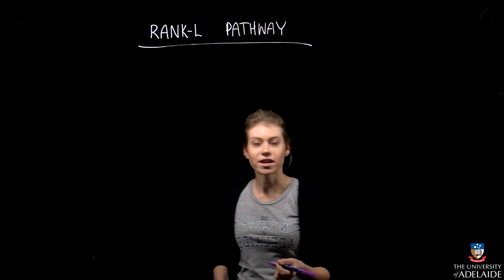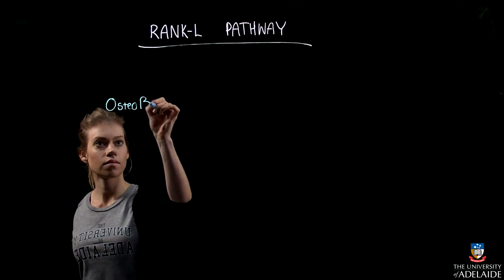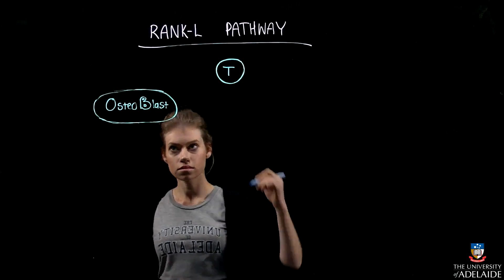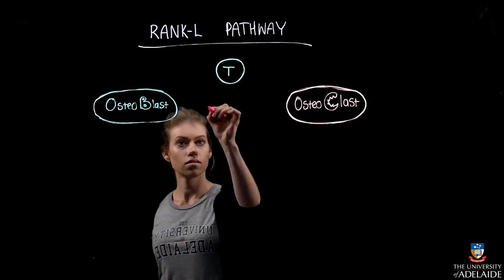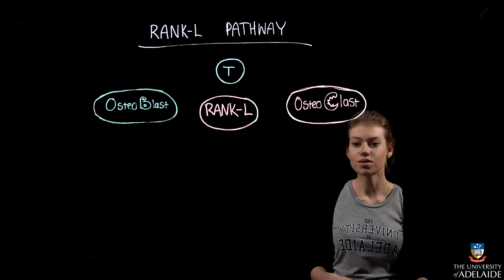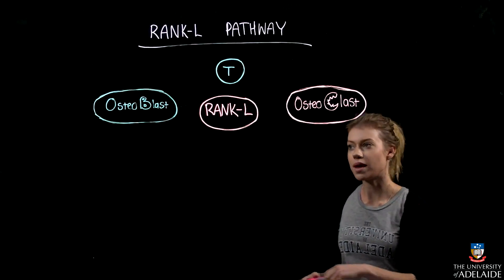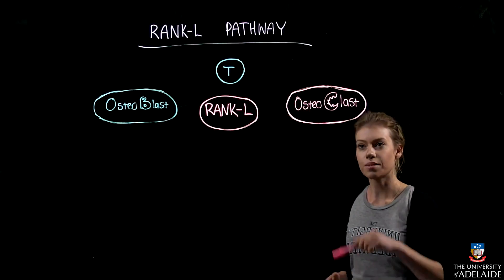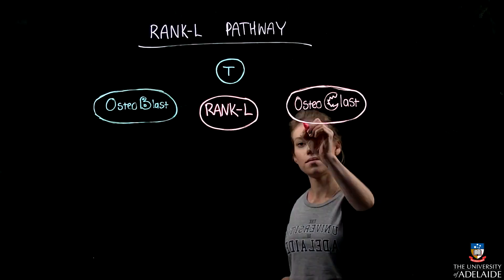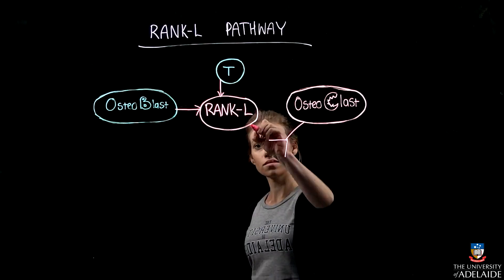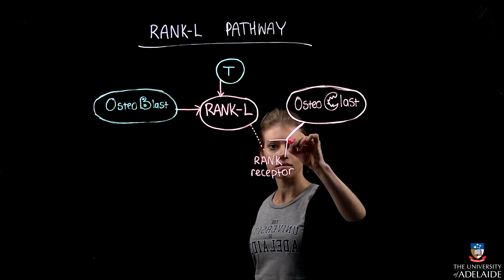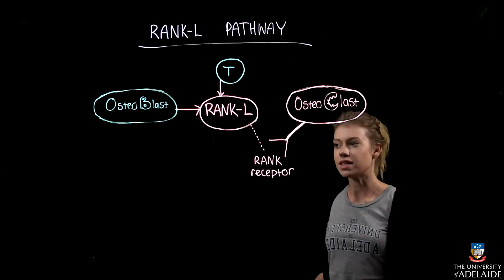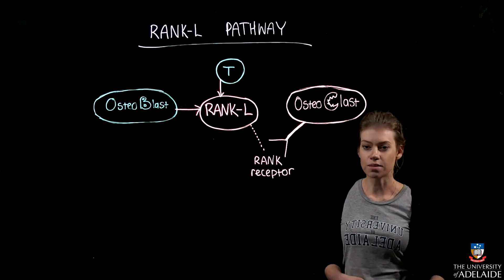Now we will explain the RANKL pathway. RANKL is a protein expressed by osteoblasts and T cells, which interacts with the RANK receptor of osteoclasts. OPG is another protein secreted by osteoblasts and epithelial cells, which works to inhibit RANKL.